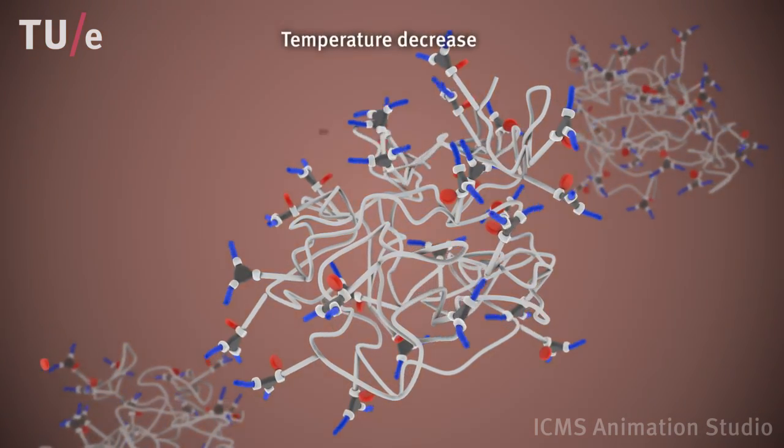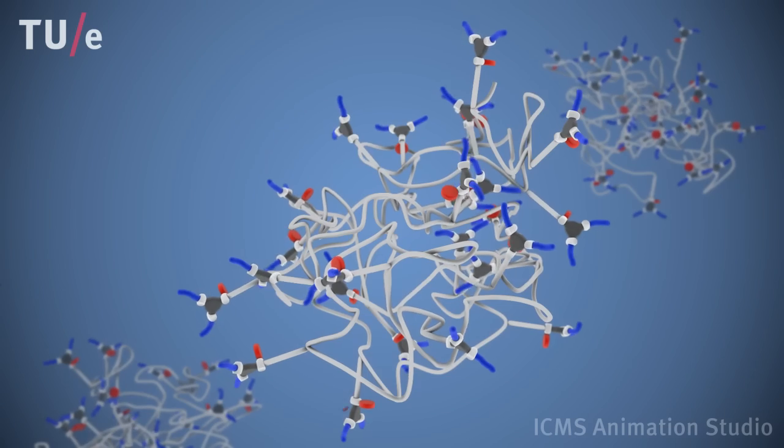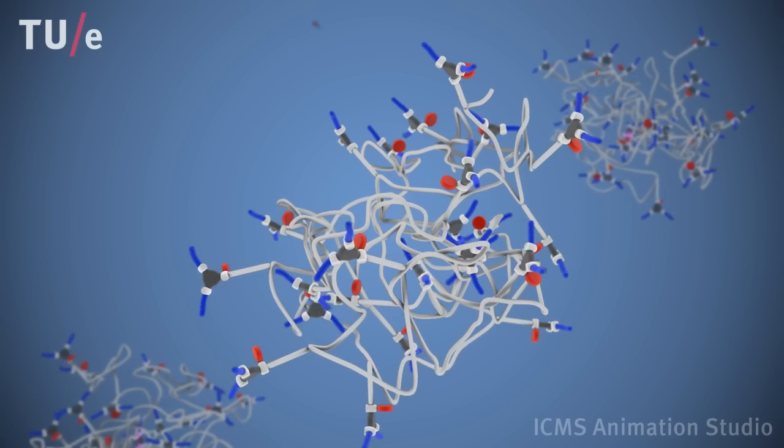A burst of ultraviolet light causes partial deprotection of the BTAs, producing molecules with the ability to self-assemble.